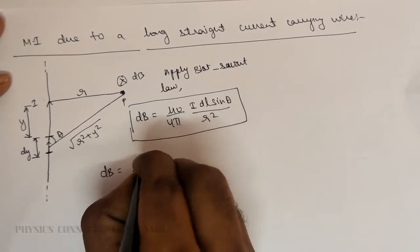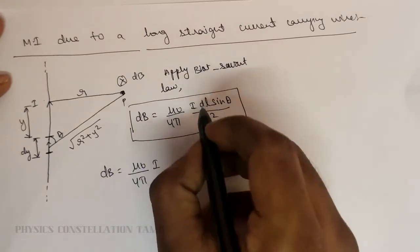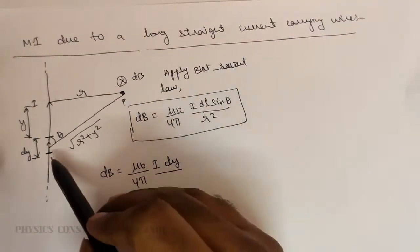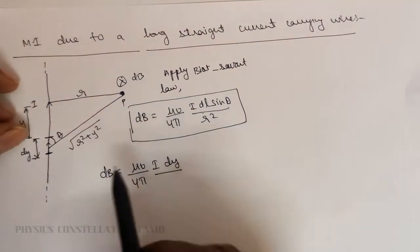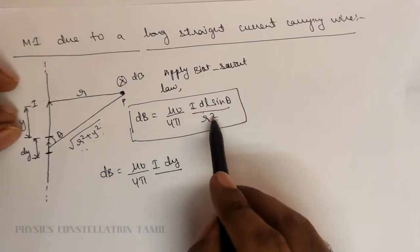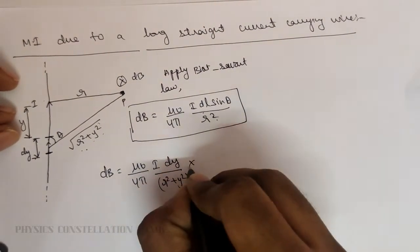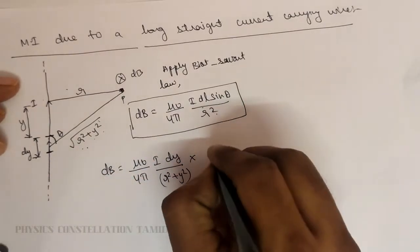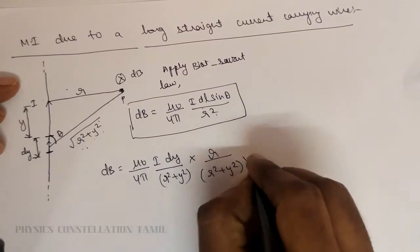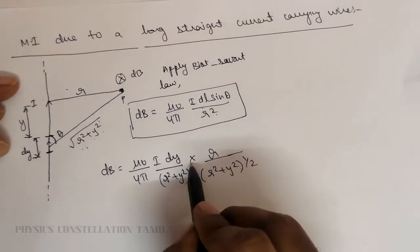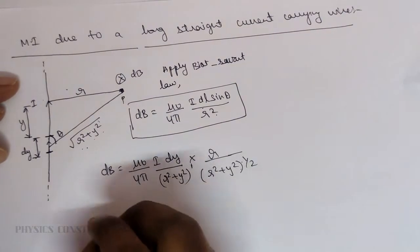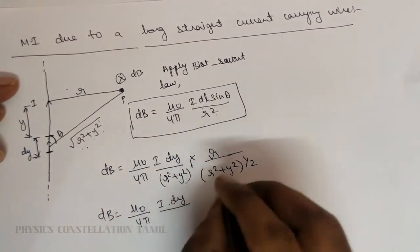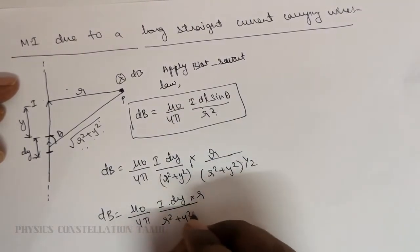Using the formula, dB = (μ₀/4π) · I · dy · sinθ / r². Here, r² (the distance squared from element to point P) is r² + y², so the denominator becomes (r² + y²). For sinθ: opposite over hypotenuse gives r / √(r² + y²). So the expression becomes: dB = (μ₀/4π) · I · dy / (r² + y²)^(3/2).